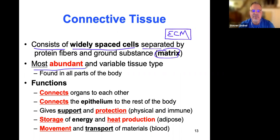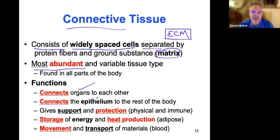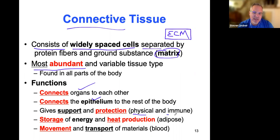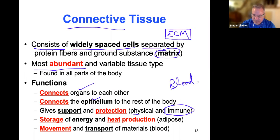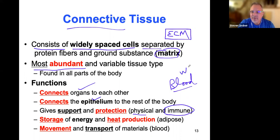Connective tissue is the most abundant and variable tissue type found in all parts of the body. Its primary function — by the term 'connective' — is to connect organs to each other and even connect epithelium to the rest of the body. It gives support and protection: physical protection and immune protection. Blood is connective tissue — it's referred to as liquid connective tissue. The white blood cells, WBCs, give us immune protection.